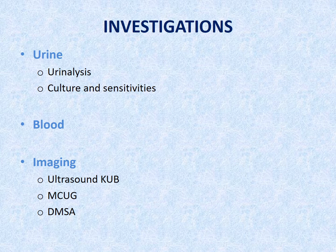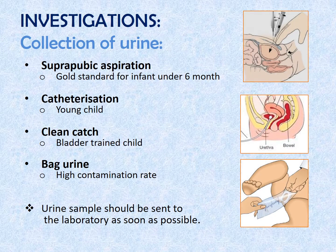Investigations can be divided into urine, blood, and imaging. Proper collection of urine is important to ensure accurate diagnosis and avoid contamination. Suprapubic aspiration is the gold standard method for urine collection in infants less than 6 months, as the bladder is an abdominal organ at this age. Catheterization is an alternative in young children not yet toilet trained. Clean catch sample is suitable for older toilet-trained children. Bag urine specimen is not recommended due to high contamination rate. The urine sample should be sent to the laboratory as soon as possible.